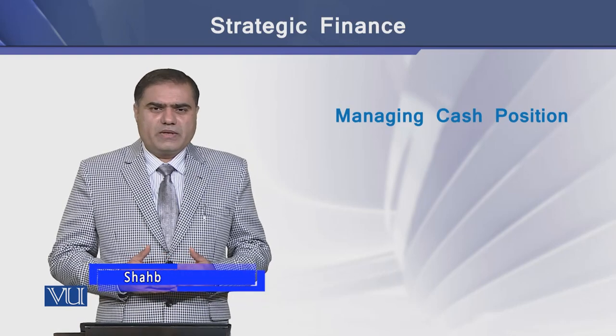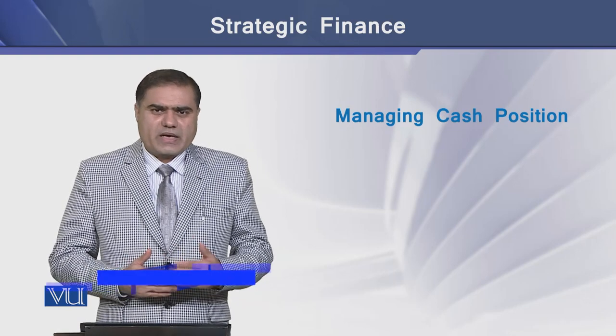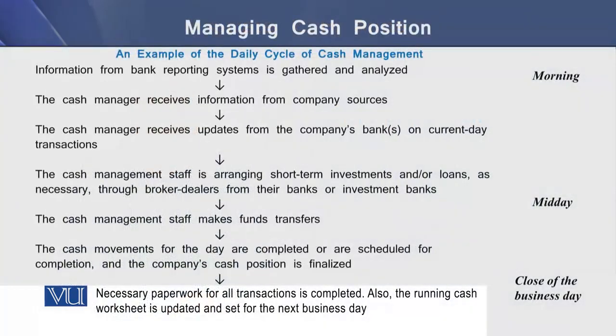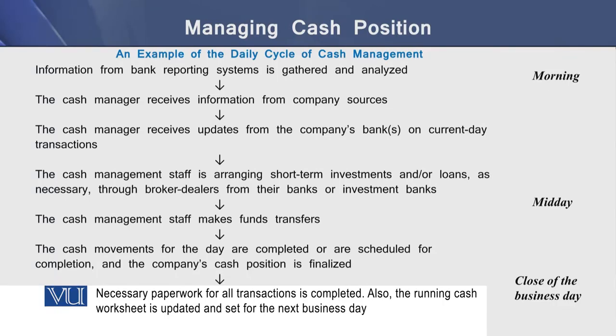Let us see how a firm's daily cash cycle works. On the screen we have a hypothetical example that depicts the daily cash cycle management of a typical firm. It starts in the morning when the firm's manager receives information from the bank's reporting system, and then the cash manager receives information from the company's own sources.